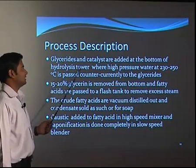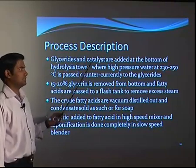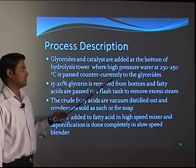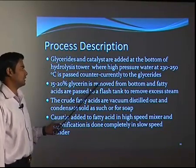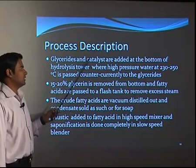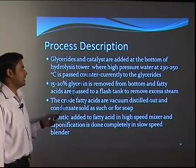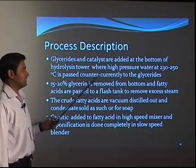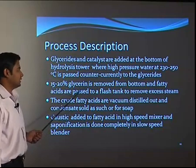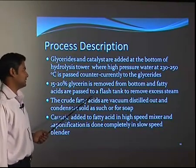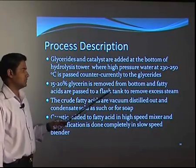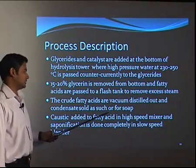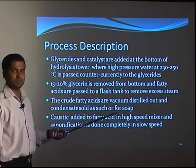The process description is as follows: the glyceride which is oil and fat and the catalyst are added at the bottom of the hydrolysis tower, where high pressure water at 230 to 250 degree centigrade is passed counter-currently to the glycerides. The high pressure and temperature decompose glycerides into fatty acids and glycerin. 15 to 20 percent glycerin is removed from the bottom, and fatty acids are passed to a flash tank to remove excess steam. Then crude fatty acids are vacuum distilled.